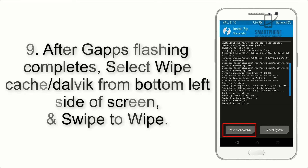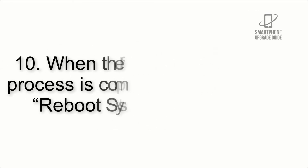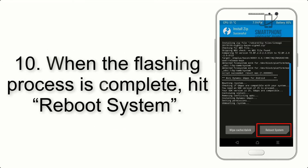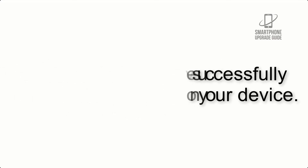Step 8: Flash the GApps zip package in the same manner. Step 9: After GApps flashing completes, select Wipe Cache and Dalvik from the bottom left side of the screen and swipe to wipe. Step 10: When the flashing process is complete, hit Reboot System. That's it — you have successfully installed the ROM on your device.